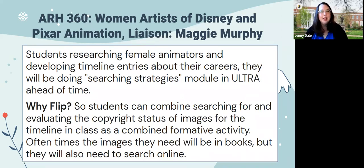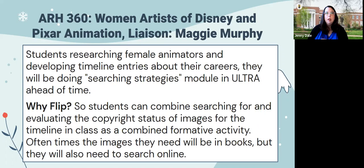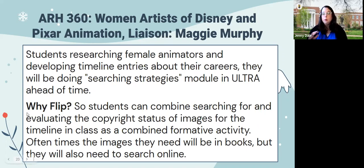This example is for art history 360 — our visual art and humanities librarian Maggie Murphy shared this. It's something she's doing this semester. Students are researching female animators and developing timelines about their careers. They're going to do the searching strategies Ultra module ahead of time, so Maggie isn't trying to cover both searching and evaluating the copyright status of images at the same time. Students have that background knowledge and can apply it to a formative assessment activity around finding and understanding copyright status of images.